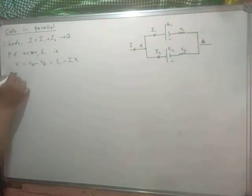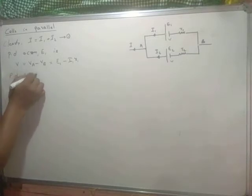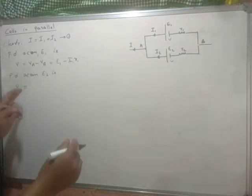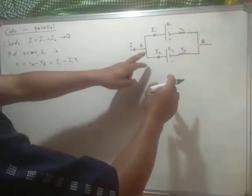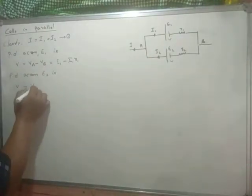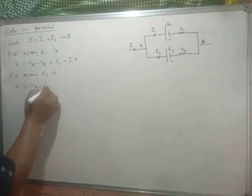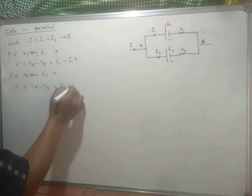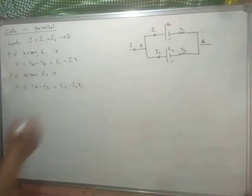Similarly, the potential difference across cell E2 is again V, where V is V_A minus V_B. This can be written as E2 minus I2 R2.